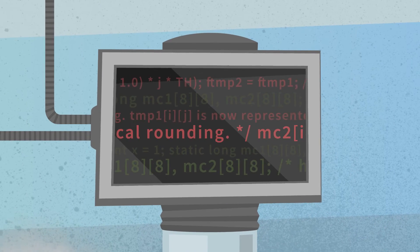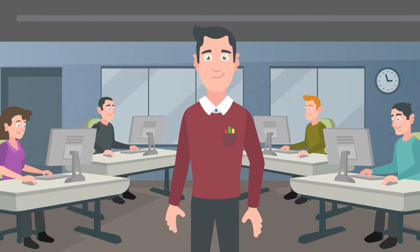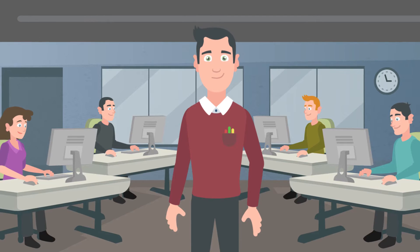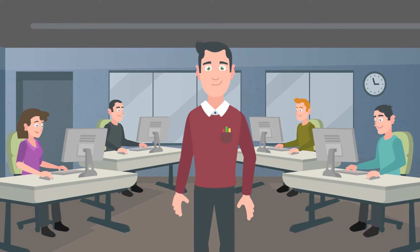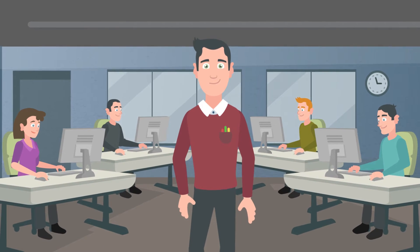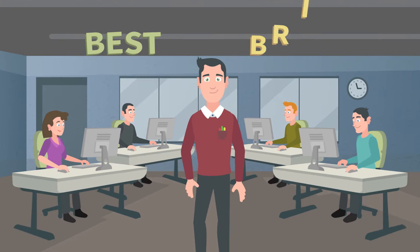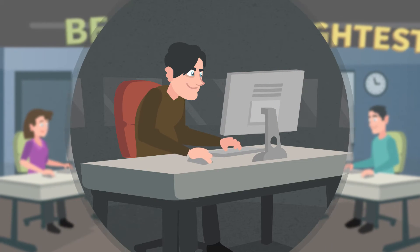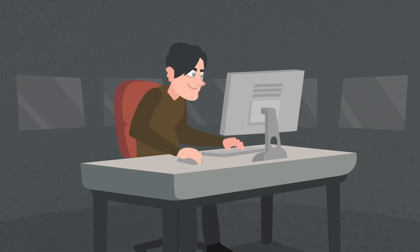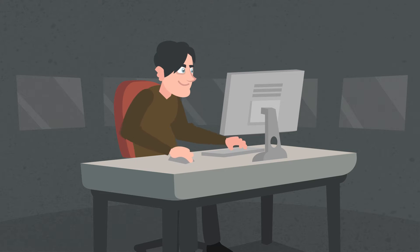One line of corrupt code can cost you everything. Just ask Tom. He's got a great team of developers who write zillions of lines of code. And even though he hires the best and brightest, errors happen, leaving his business exposed to hackers working around the clock trying to penetrate his systems.